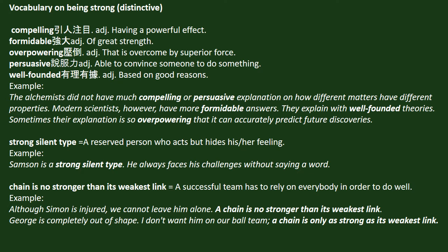Strong silent type: a reserved person who acts but hides his or her feelings. Example: Samson is a strong silent type — he always faces his challenges without saying a word. Chain is no stronger than its weakest link: a successful team has to rely on everybody in order to do well. Example: Although Simon is injured, we cannot leave him alone — a chain is no stronger than its weakest link. Another example: George is completely out of shape, but a chain is only as strong as its weakest link.